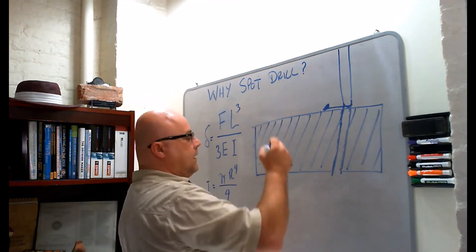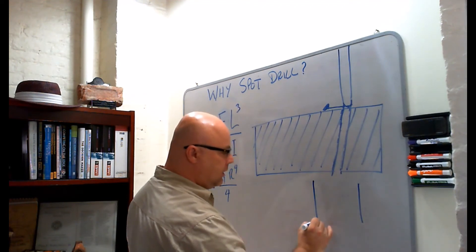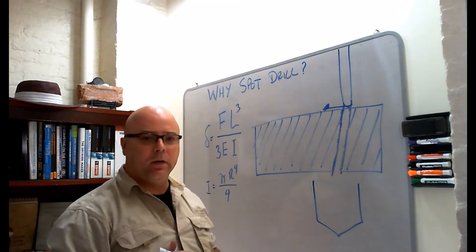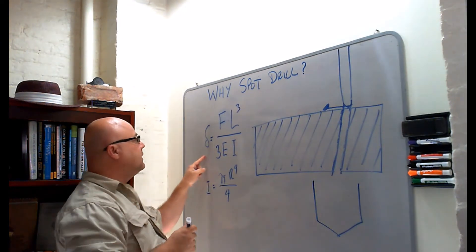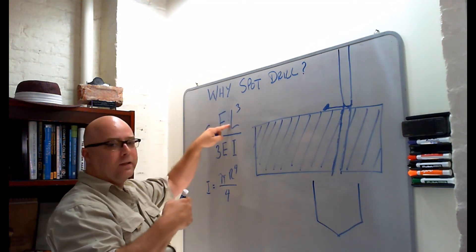Well, a spot drill has a tendency to be much larger diameter compared to its length from its support. The deflection here actually depends on the cutting force, so the amount of that cutting force, the length cubed.